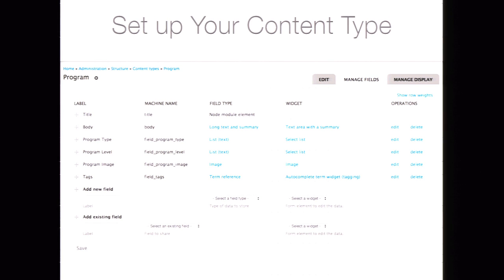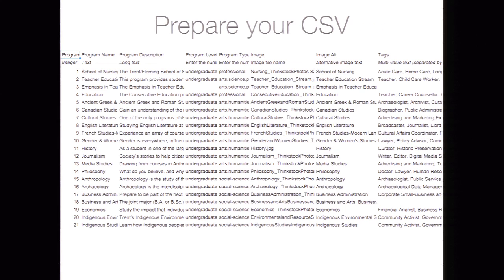Setting up your content type is the part that we're really good at as site builders — we're going to configure the site to have whatever fields we need. The trickier part comes with preparing your CSV. In the case of this example, I'd want to give this to my client. I don't know anything about the programs at this university, so I want the client to have a place to put this content while we're getting the Drupal site ready.